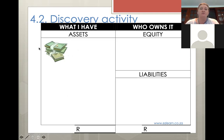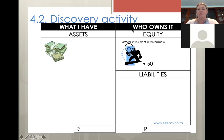From the business's perspective, we keep the owner and business transactions separate. From the owner's perspective it was their tuck shop money, but now they've put it into the business. So what does that represent? It's capital - exactly. So we've got our partners' investment in the business, 50 rand - that is your capital.